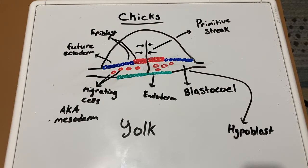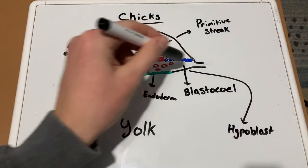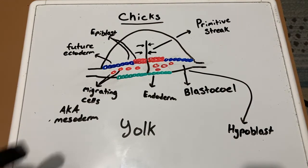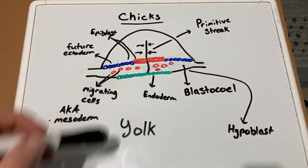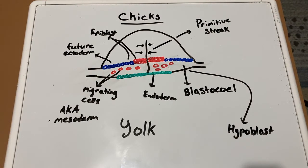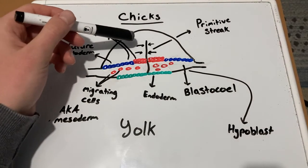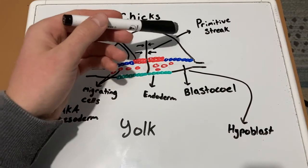Gastrulation for chicks is slightly different than that of frogs. The embryo of the chick is composed of an epiblast level, which is the upper level, and a hypoblast level, which is the lower level. The epiblast cells move toward the middle of the blastoderm, detach, and then move inward. This movement of cells causes a pileup in the middle of the blastoderm, forming the primitive streak, which is the same thing as the blastopore for frogs.